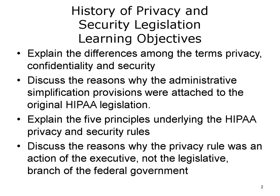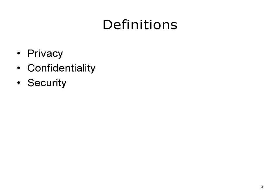The objectives of this lecture, Background of HIPAA, are to explain the differences among the terms privacy, confidentiality, and security; discuss the reasons why the administrative simplification provisions were attached to the original HIPAA legislation; explain the five principles underlying the HIPAA privacy and security rules; and discuss the reasons why the privacy rule was an action of the executive, not the legislative branch, of the federal government.